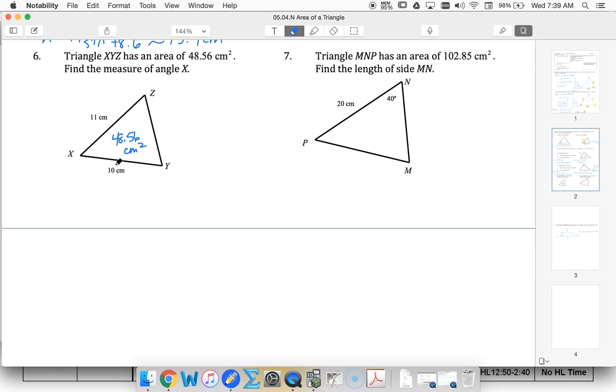So area is half - in this case, side z times side y times sine of the angle in between, which is x. I'm going to plug in everything I know: 48.56 equals one-half times 11 times 10 times sine of x. Going to my calculator,